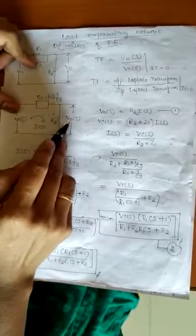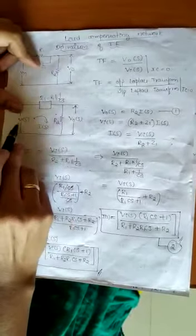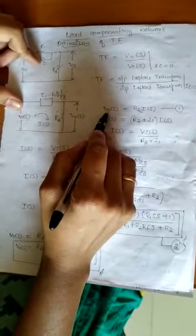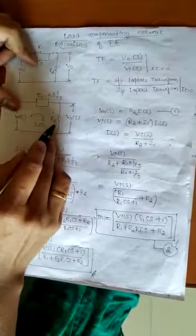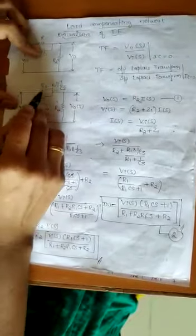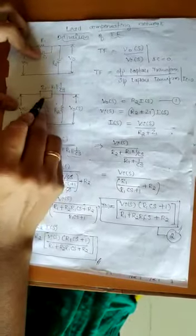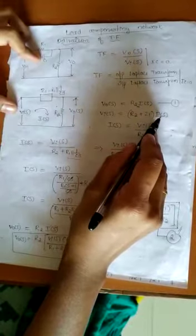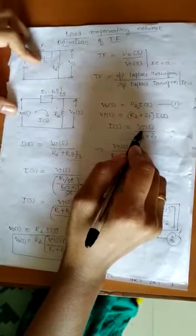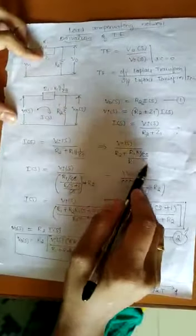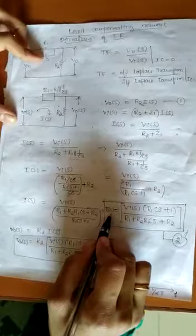We need to obtain the expressions for V₀(S) and Vᵢ(S). V₀(S) = R2 · I(S) — consider this as equation 1. Similarly, the input voltage Vᵢ(S) = (Z1 + R2) · I(S). Rewriting with respect to I(S): I(S) = Vᵢ(S) / (R2 + Z1). Substituting Z1 = R1 in parallel with the capacitor and simplifying the denominator, we obtain the final expression for I(S).